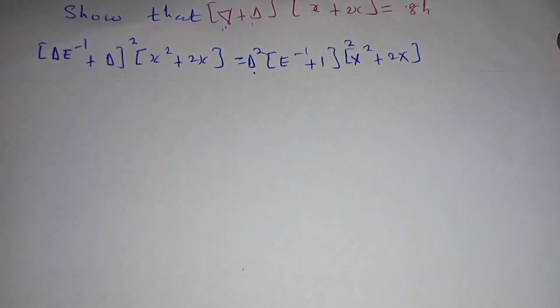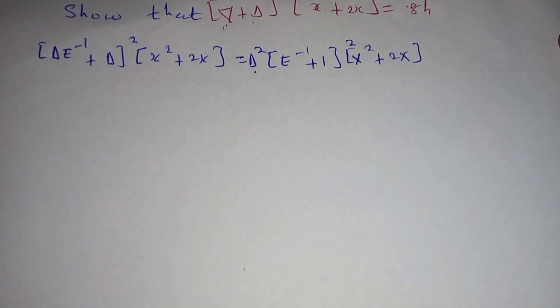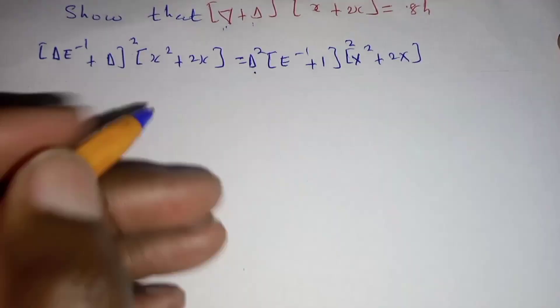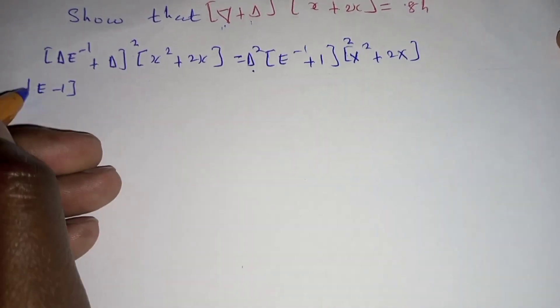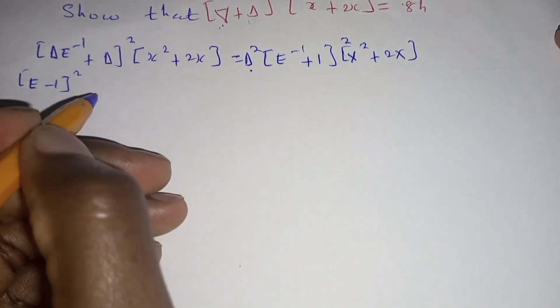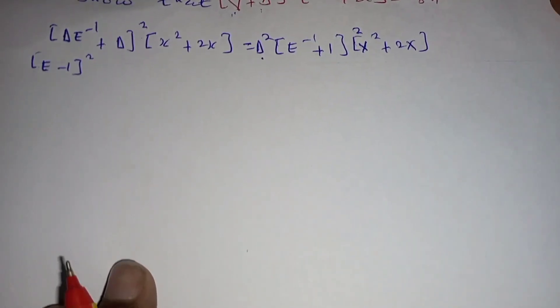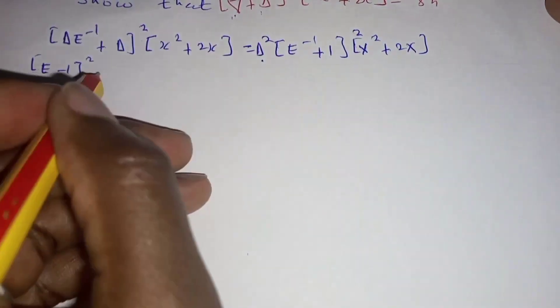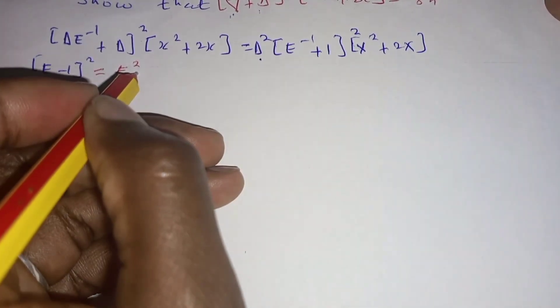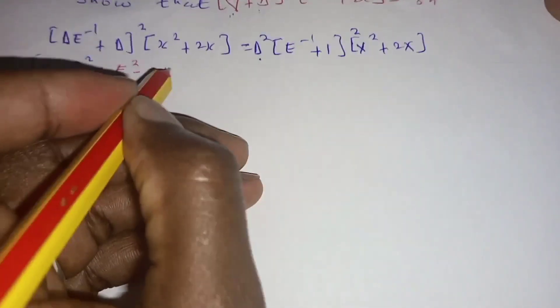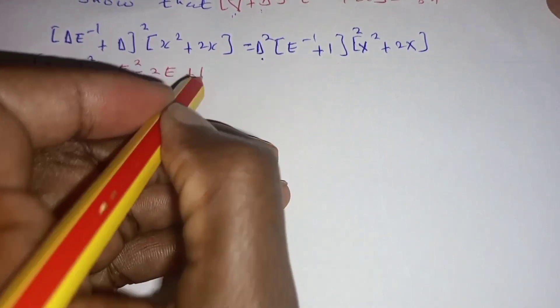Then we substitute the forward difference operator with the fact that it is equivalent to the shift operator E minus one, and we square this part. When we square this part the result will be E squared minus two E plus one.